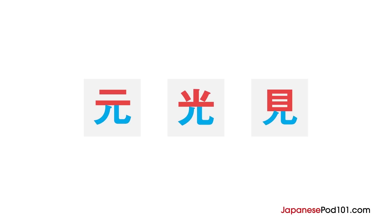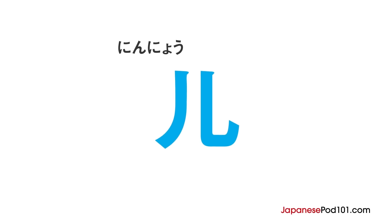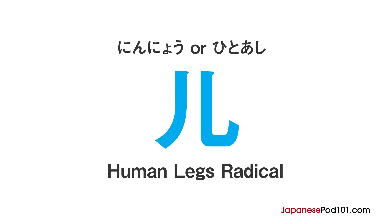It's this part here. It looks like a pair of legs. This particular radical is called the human legs radical, and it's used in some of the most common of all kanji. Let's take a look at it in more detail.